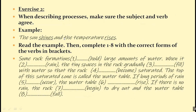Here is a different exercise. When describing processes, make sure that the subject and verb agree. For example, 'the sun shines' and 'the temperature rises' — we have to add -s. This is a very simple grammatical rule, yet so many students make this mistake: they don't add -s at the end of the verb when the subject is singular. Read this paragraph and put the verbs in the correct form — decide if you're going to add -s or not.